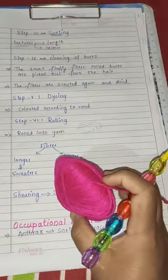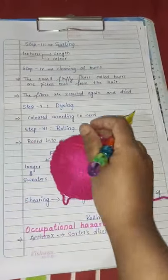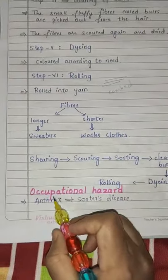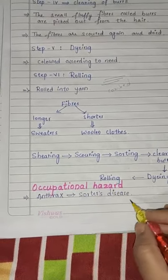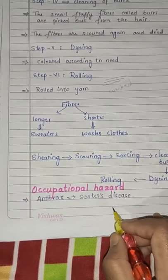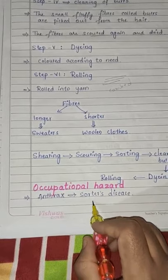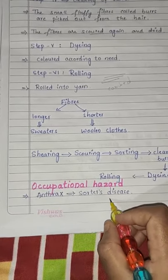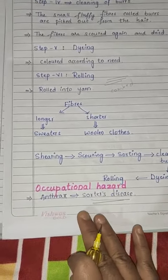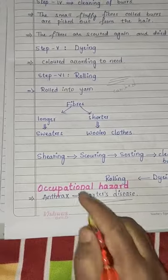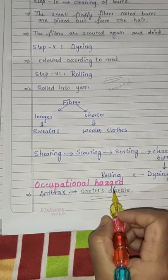This is the wool — after all these processes, we get this kind of wool. Next, occupational hazards: the people who work in the wool industry can get infected by a bacterium called anthrax, which causes a fatal blood disease called sorter's disease. Such risks faced by workers in any industry are called occupational hazards.